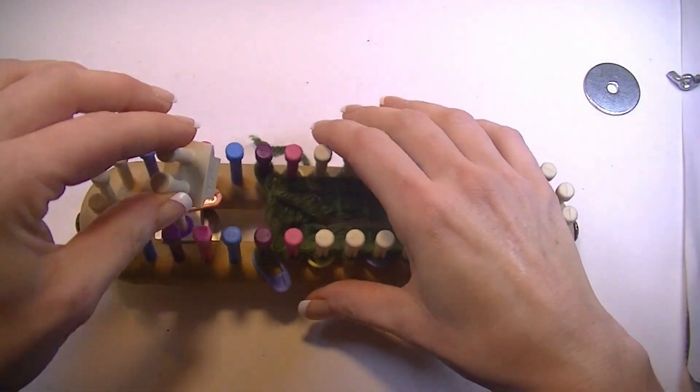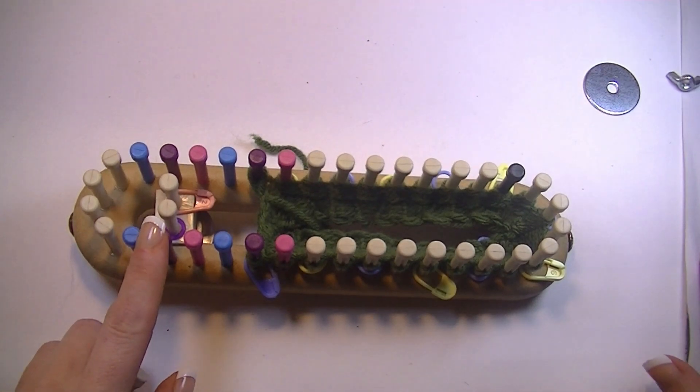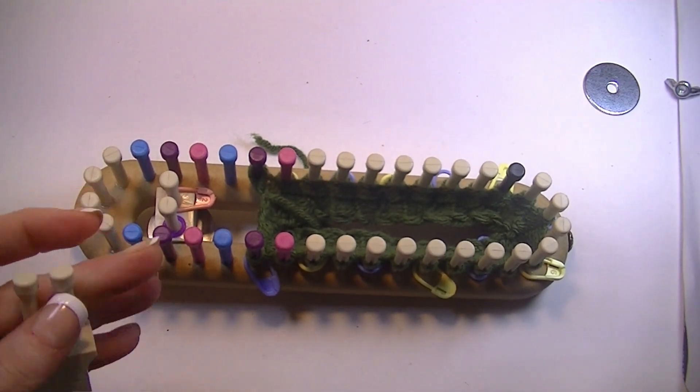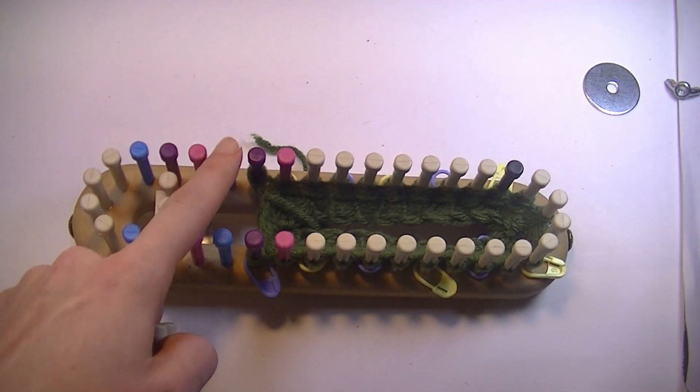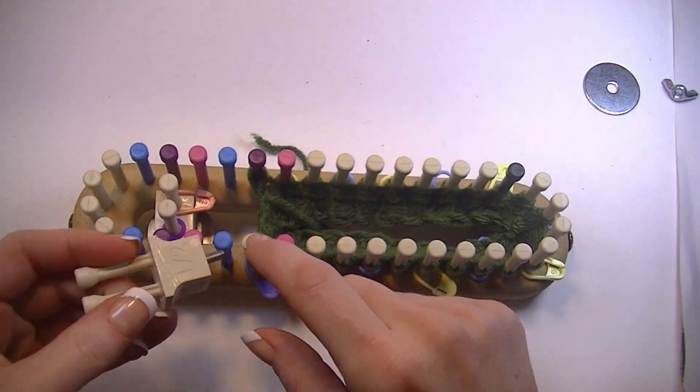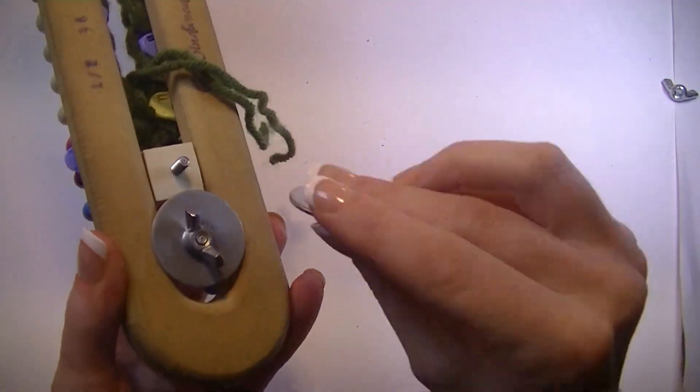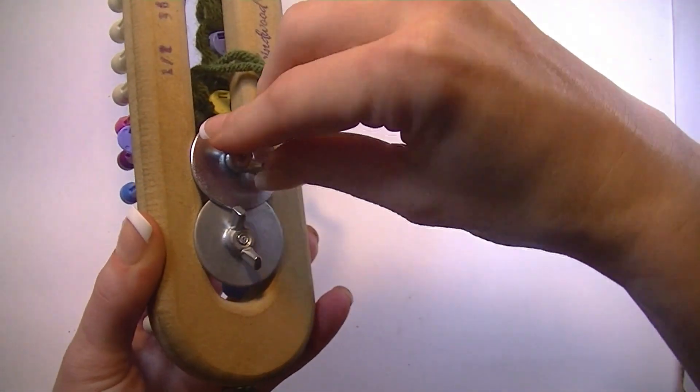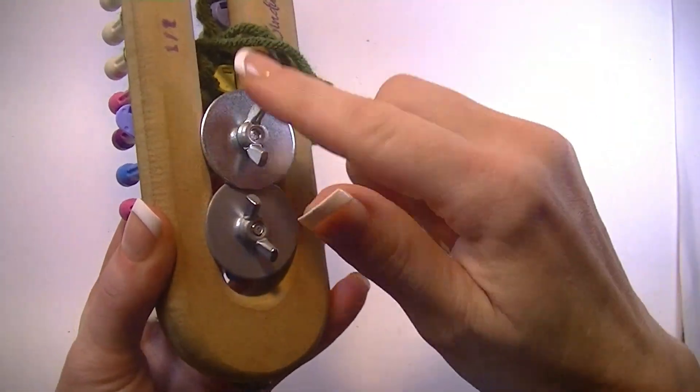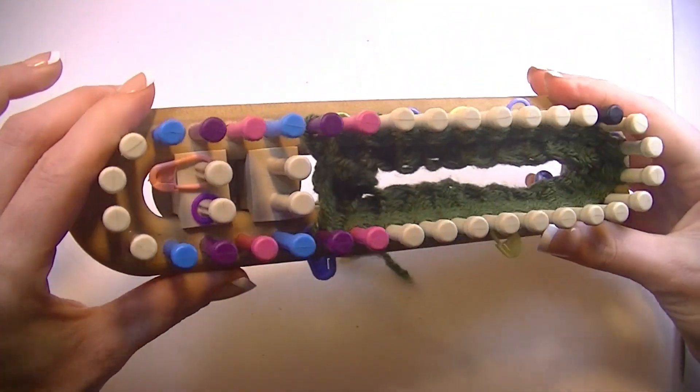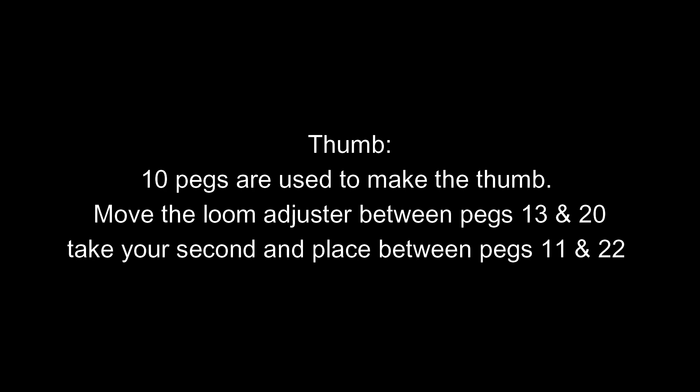The thumb area is worked over 10 pegs. So you will have pegs between peg 13 and 20 and you're going to put another wedge between peg 11 and 22. But this one will be going in the opposite direction. I think it's all good.